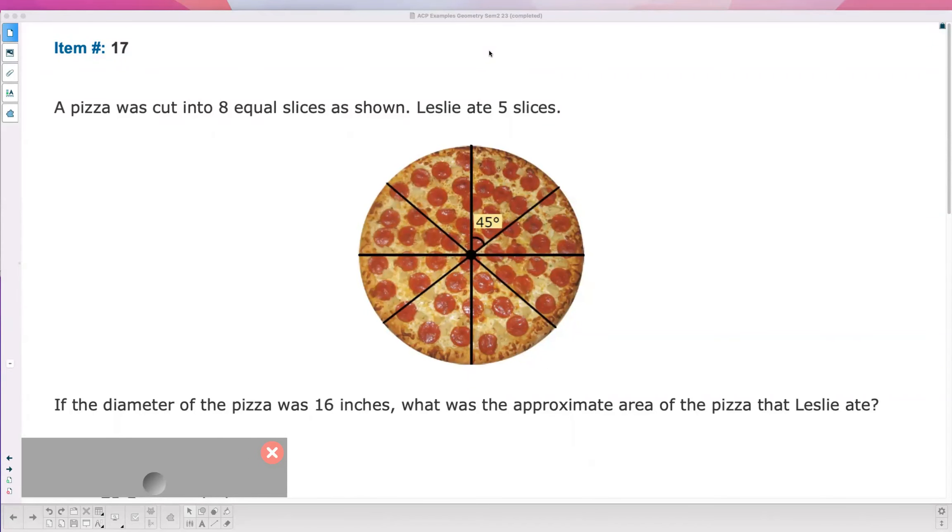All right, number 17. A pizza is cut into eight equal slices as shown. Leslie ate five slices. If the diameter of the pizza was 16 inches, what is the approximate area of the pizza Leslie ate?